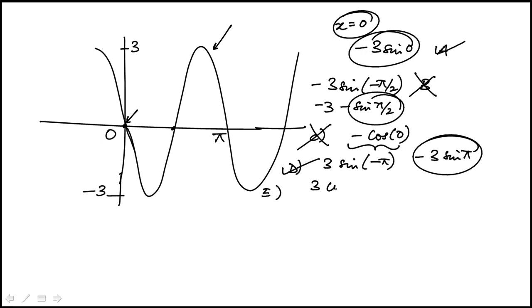e would be 3 cosine minus pi over 2. And that's going to be 0. So e also works. So we're between a, d, and e. We have to pick another point.